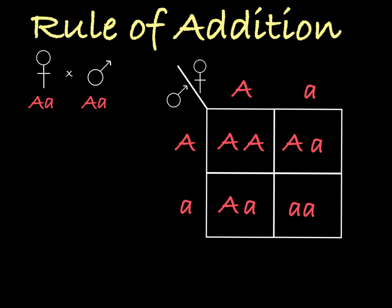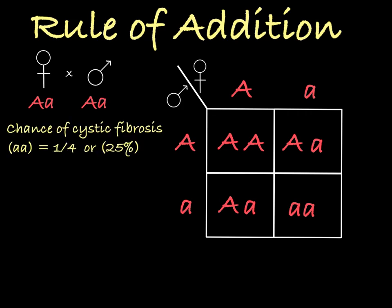A doctor can see that only one box contains the genotype associated with cystic fibrosis, little a little a. And we can go back to the parents and say you have a 25% chance of having a child with cystic fibrosis. These other three boxes all contain possible genotypes that result in a child without cystic fibrosis.